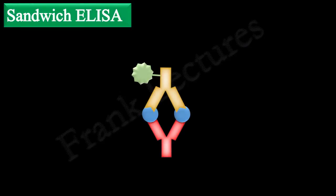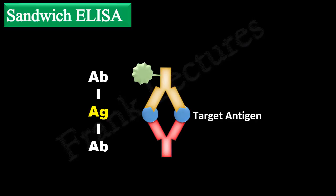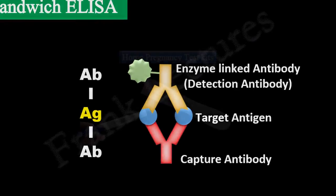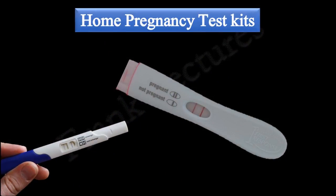In the last video lecture, we covered Sandwich ELISA. There we saw that the target antigen is sandwiched between two antibodies, namely the capture antibody and the detection antibody. One important application of Sandwich ELISA is home pregnancy test kits.